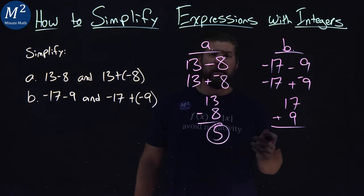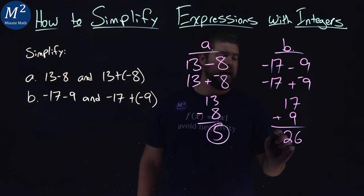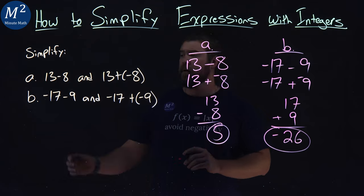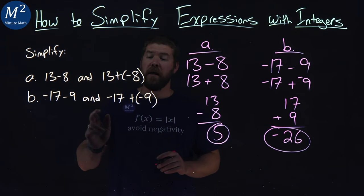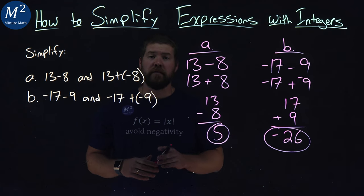Well, 17 plus 9 comes out to be 26. We said it would be negative. Put a negative on there. And there we have it. Negative 17 minus 9 and negative 17 plus negative 9 is negative 26.